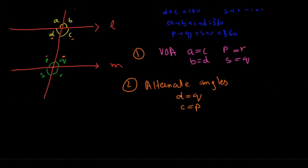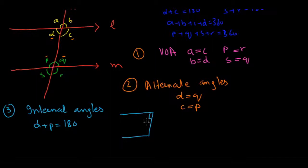Then the third pair we have are internal angles. So these are D and P and they add up to 180. So as the name suggests, they are internal. If you look at line L and this line and this line, they are internally located in these lines.